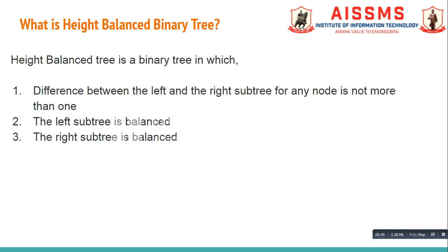Now let us see what is a height balanced binary tree. A given binary tree is height balanced when it satisfies three conditions. First, the difference between left and right subtree heights for any node is not more than one. Second, the left subtree is balanced. Third, the right subtree is balanced.